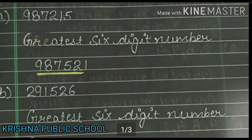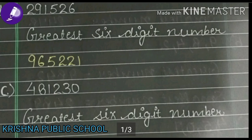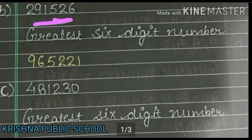Now we see part number B. We are given 2,091,526. We have to arrange these digits so that our greatest digits form the biggest number — the greatest 6-digit number.